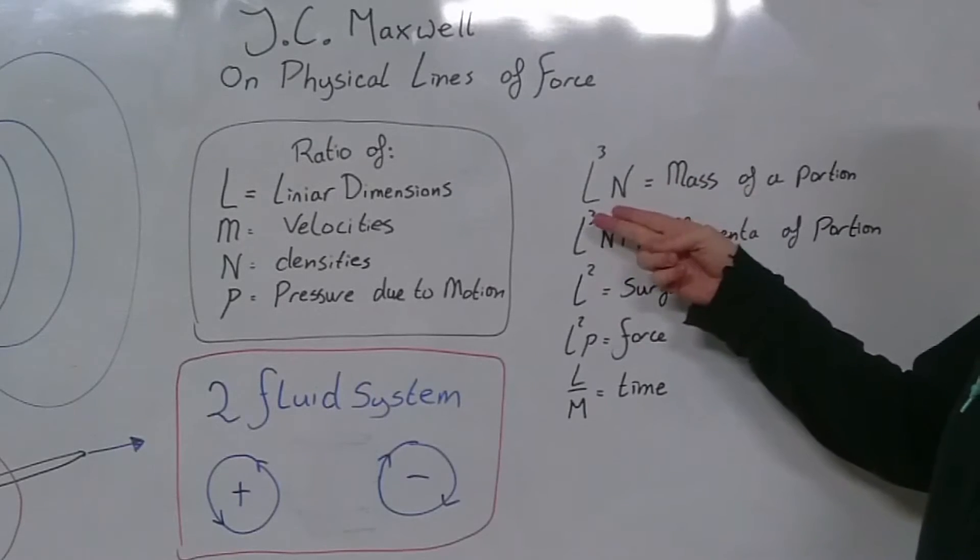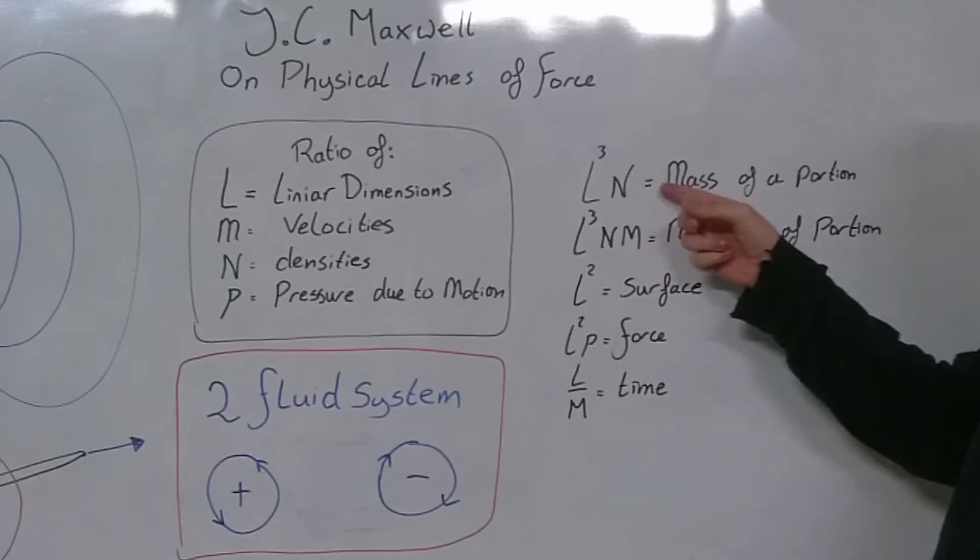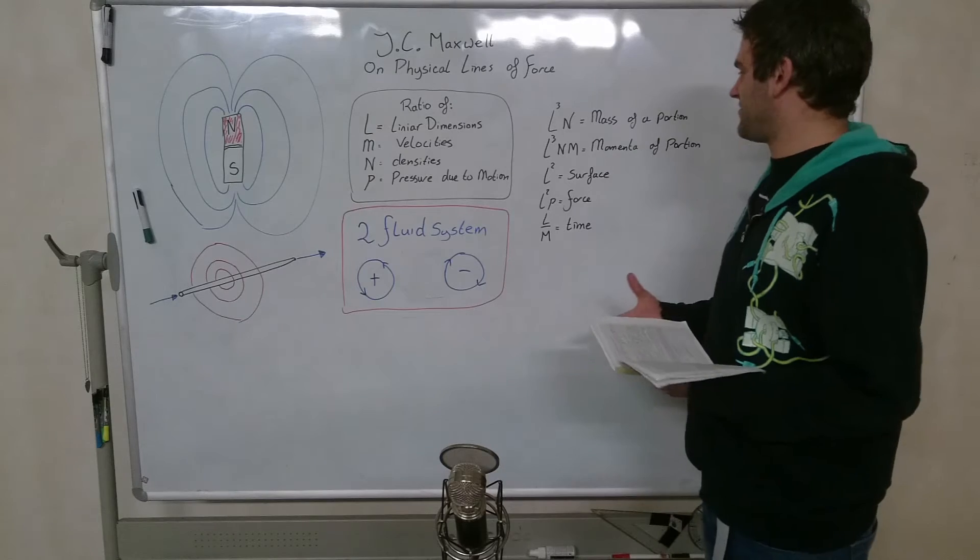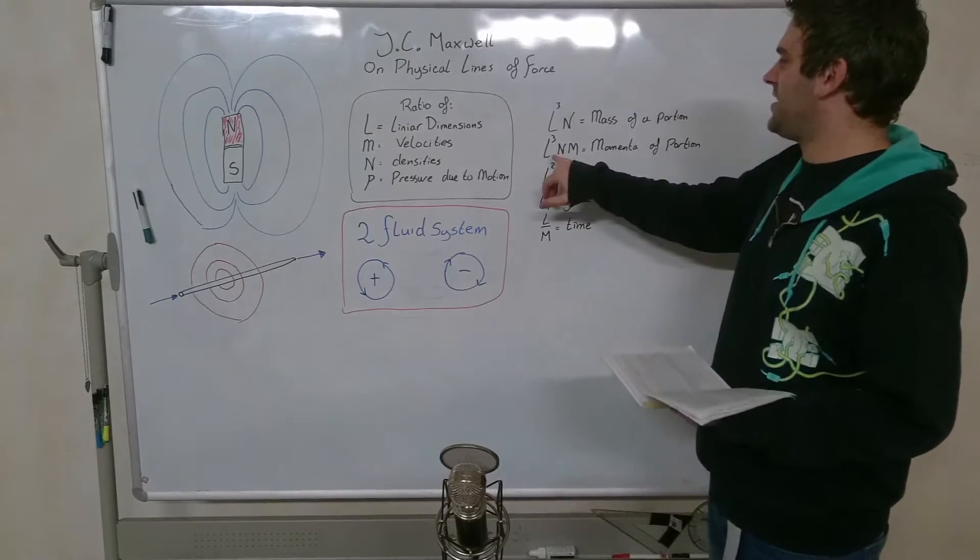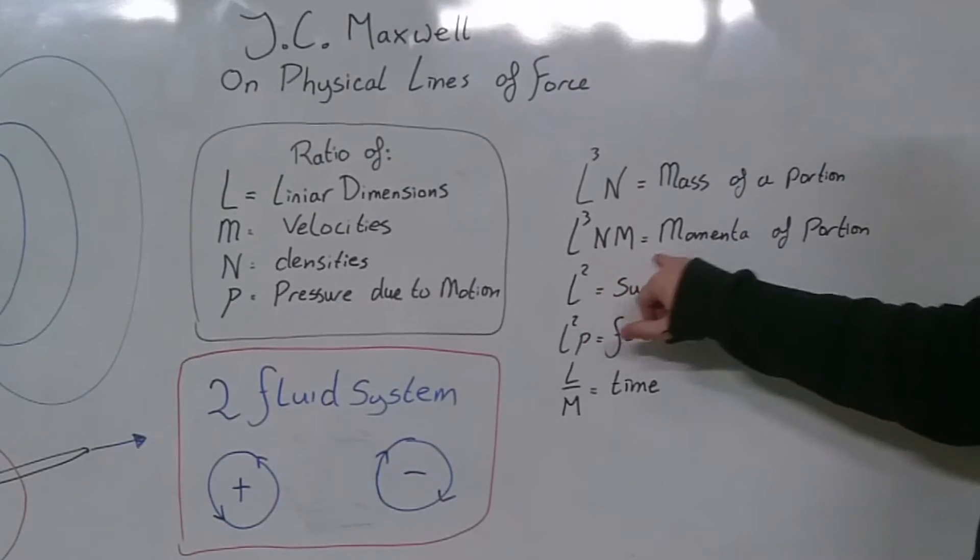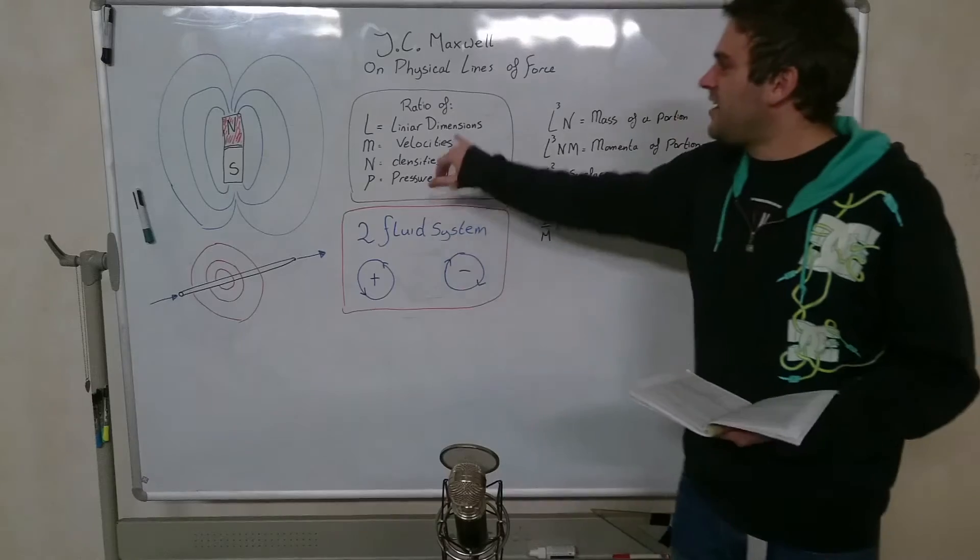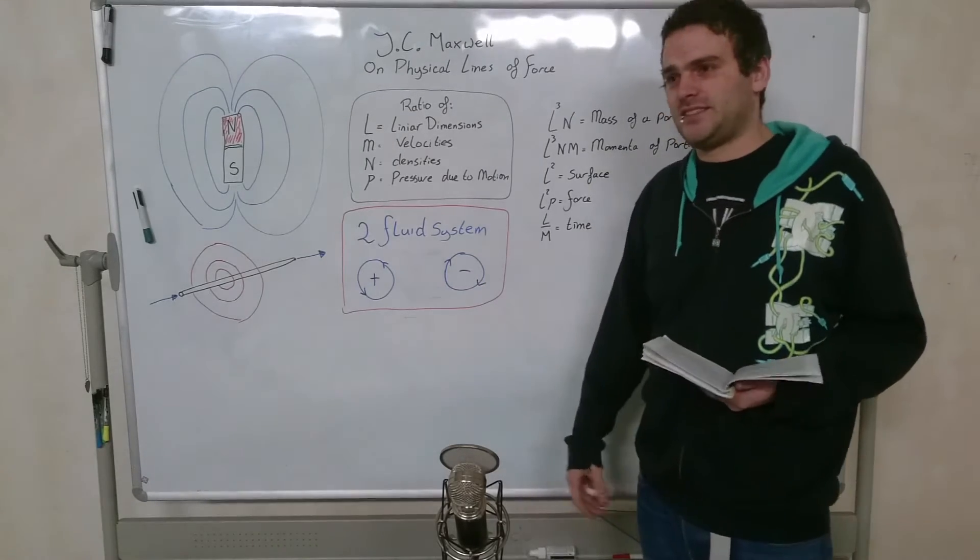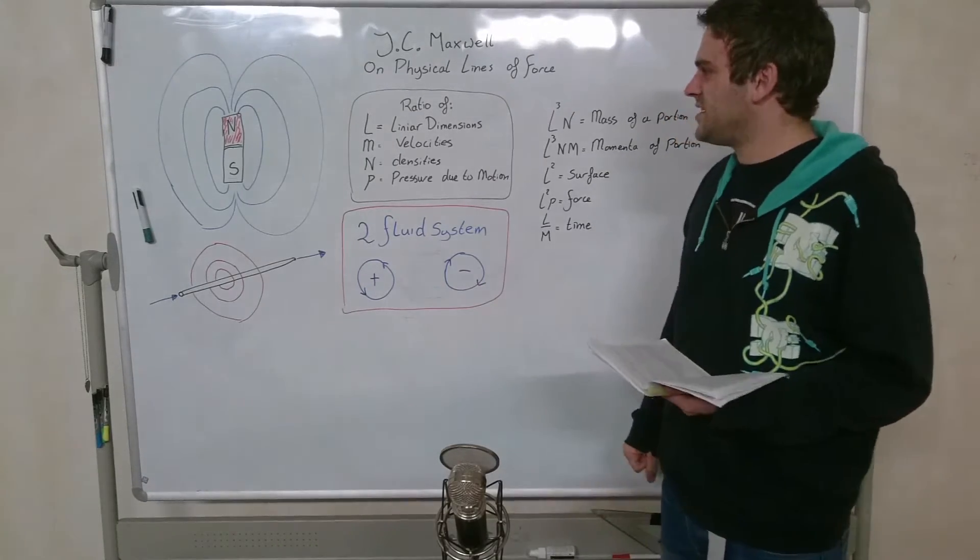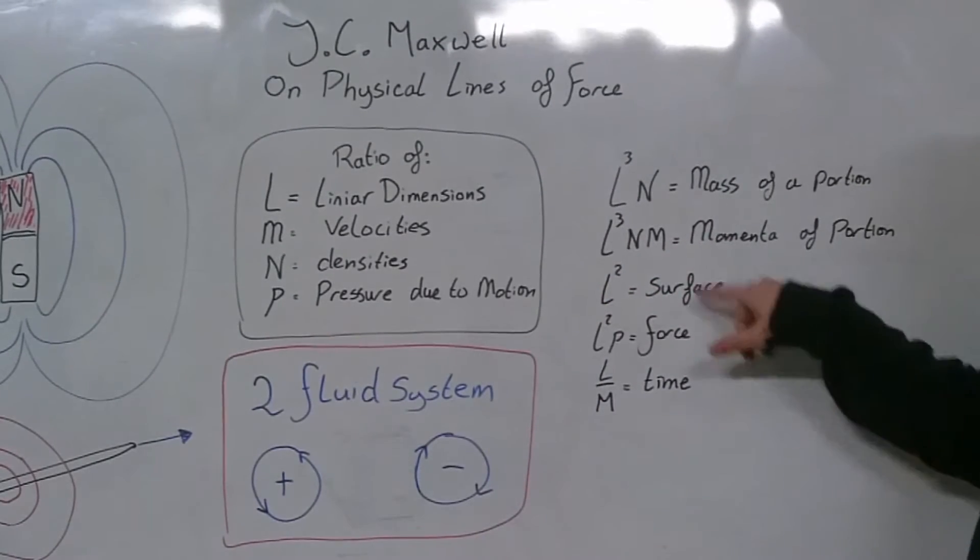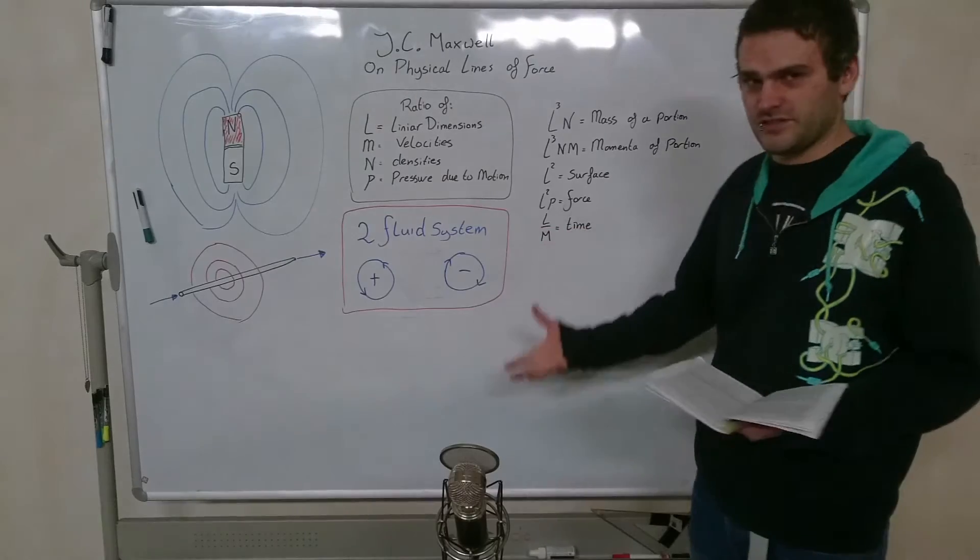So we have linear dimensions. The length dimension cubed times the density gives the mass of the portion. If we want to know the momenta of that portion, we would say that L cubed times the density times its velocity would give us the momenta. The L would be a linear dimension. It could be either in the X dimension, Y and Z dimension. So if we would have L squared, we would call that a surface. If we have L cubed, we would call that a volume.